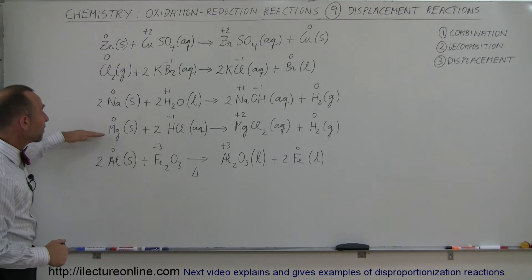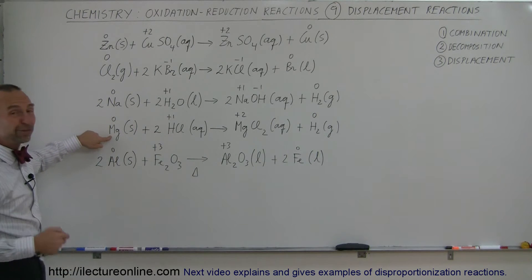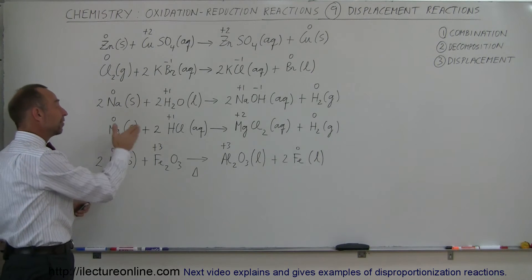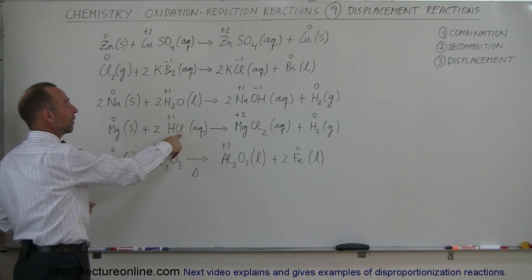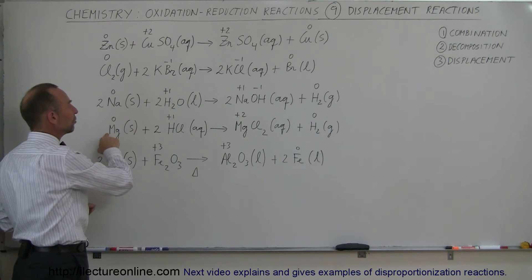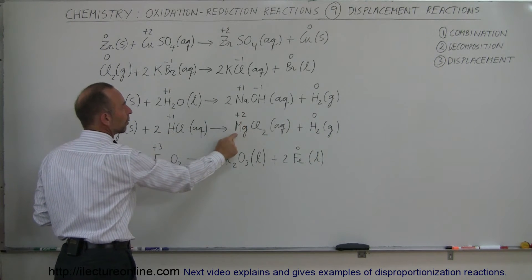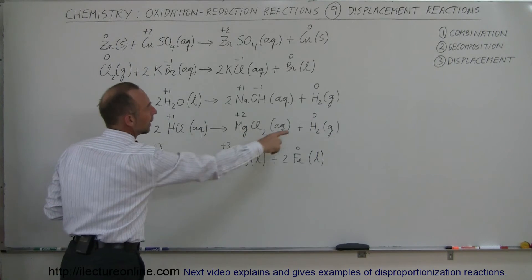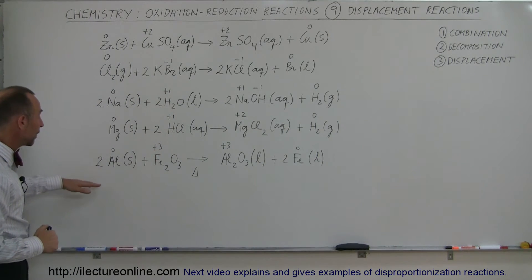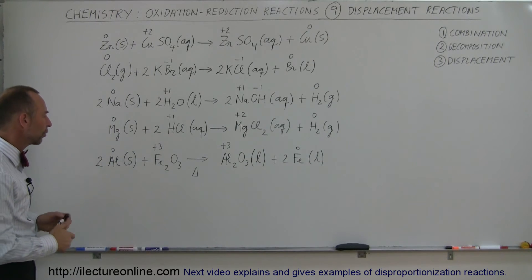Here we have magnesium and hydrochloric acid. Notice magnesium is very easily oxidized as well — it very easily gives an electron away. Chlorine is very electronegative and will grab the electron, turning magnesium into a positive ion with an oxidation number of plus two, combined with the chlorine, and hydrogen gas will then escape.